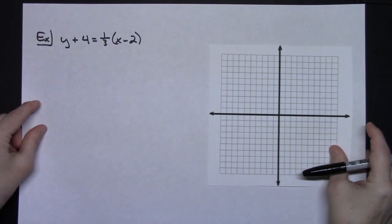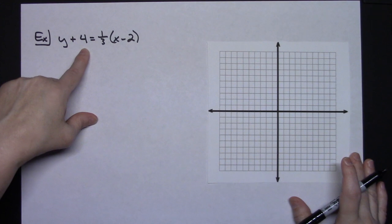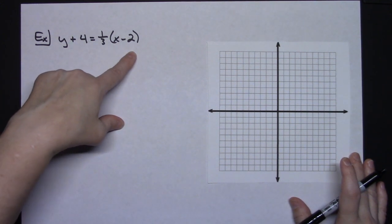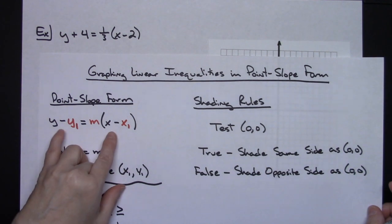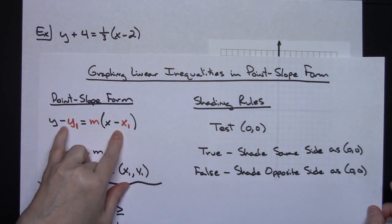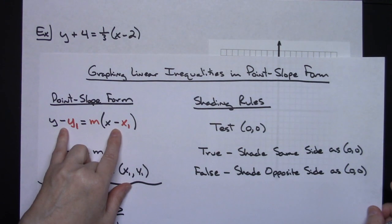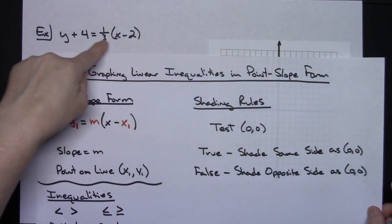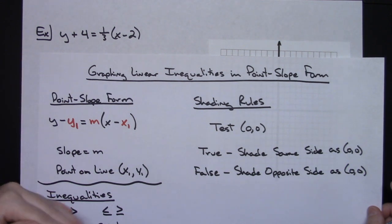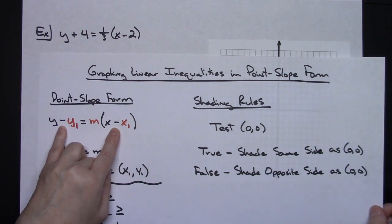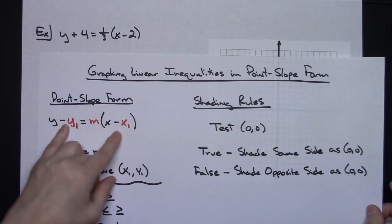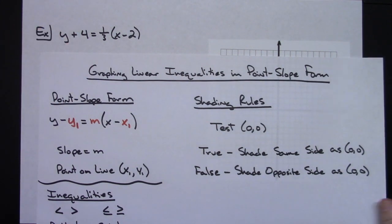Let's look at an example. Suppose we've got y plus 4 equals one-third times the quantity x minus 2. Let's bring back the formula for a moment. Notice the formula has minus signs in it. That means when looking at an equation, you want to pull out the opposite of what you actually see. So anytime you see minus signs in the formula, you pull out the opposite values.